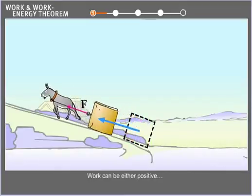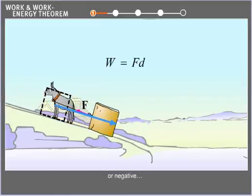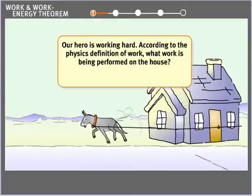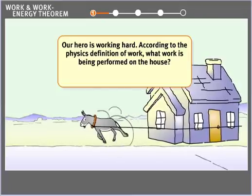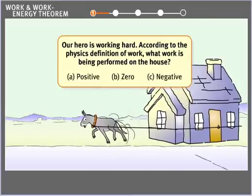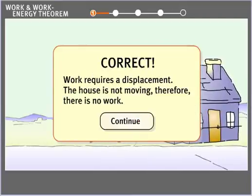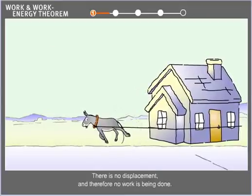Work can be either positive or negative. Our hero is working hard. According to the physics definition of work, what work is being performed on the house? Correct. There is no displacement, and therefore, no work is being done.